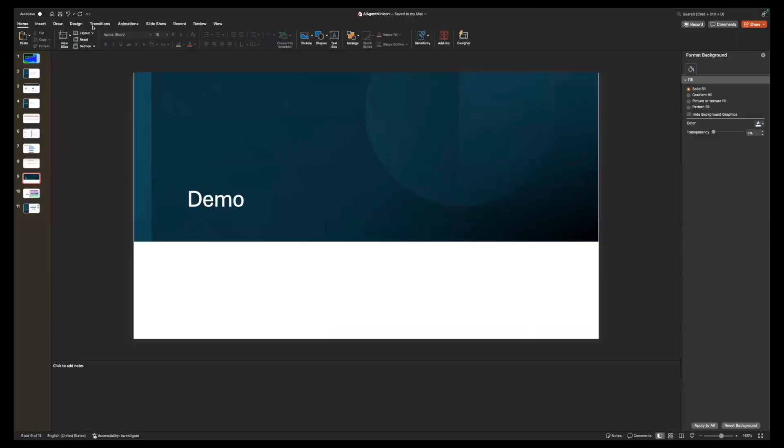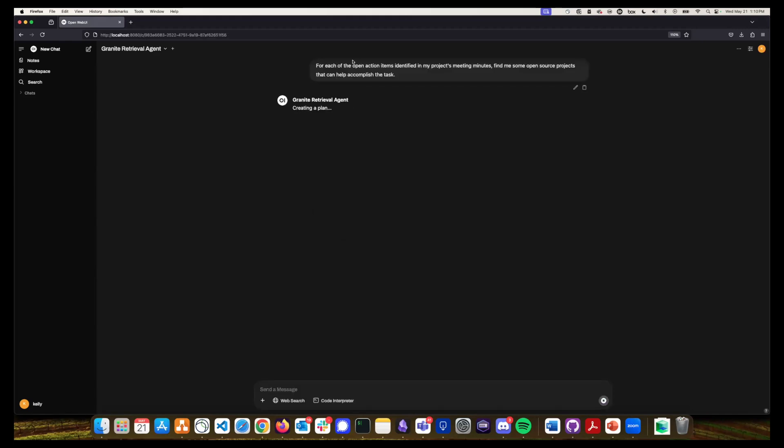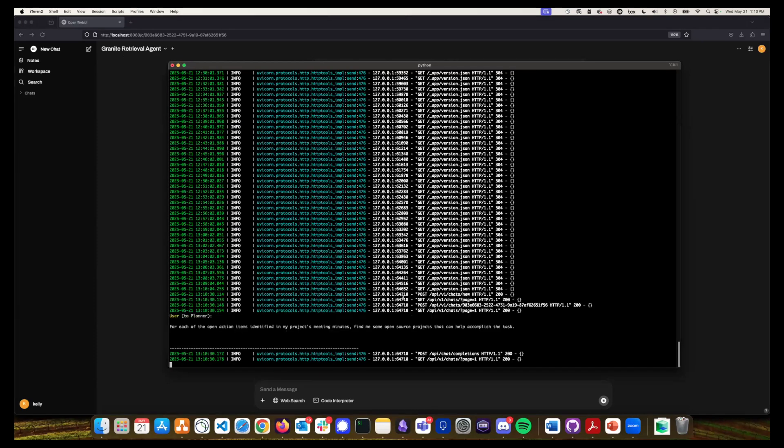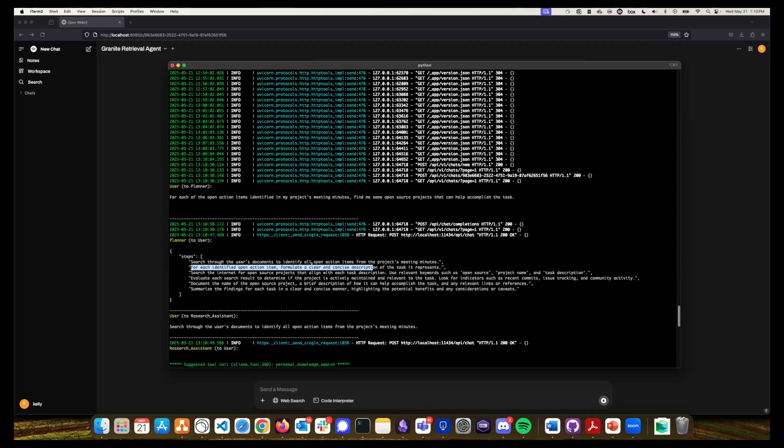So live demo time. So I've got this running in my web browser. This is open web UI. I'm going to give it a prompt. So I've got some local documents in here that are completely fabricated meeting minutes. And I'm going to say for each open action item identified in my projects meeting minutes, find me some open source projects can help me accomplish the task. So this is going to get that going. And so it's creating a plan. I'm going to show you the terminal over here. So this shows you all the chatter going in between the agents and you can see the data that's being passed back and forth.